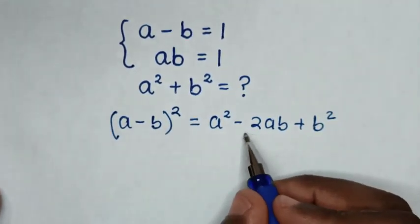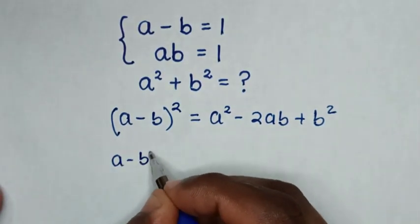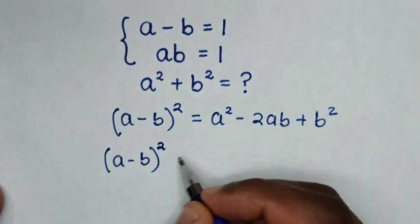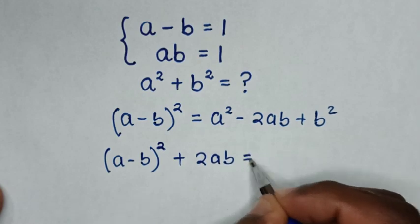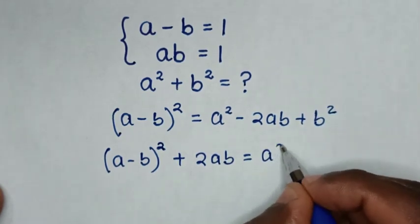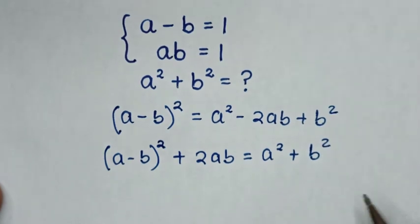Then we'll take this negative 2AB to the left side, so it will be A minus B bracket square plus 2AB is equal to A square plus B square. Then from here,